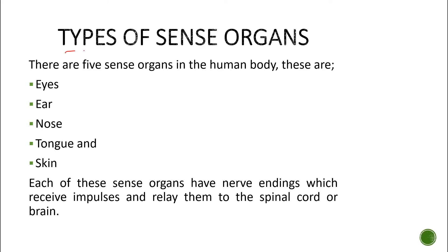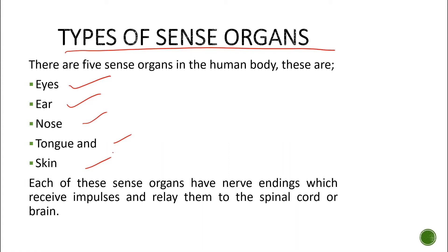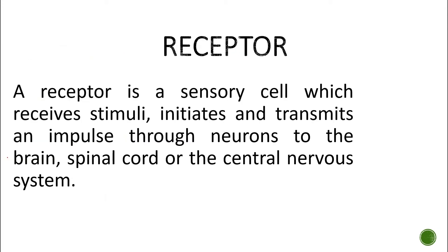Now let's look at the types of sense organs. There are five types: the eyes, the ear, nose, tongue, and skin. Each of these sense organs have nerve endings which receive impulses and relay them to the spinal cord or brain.